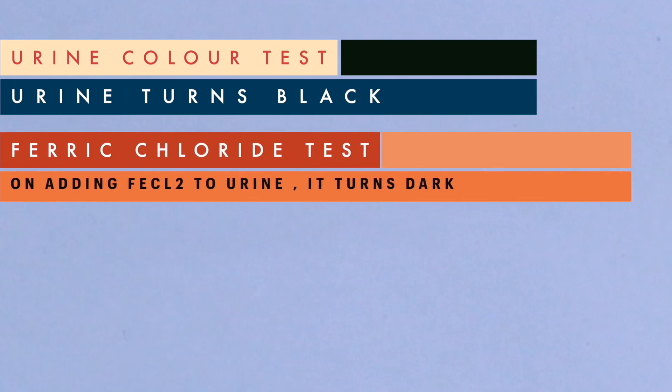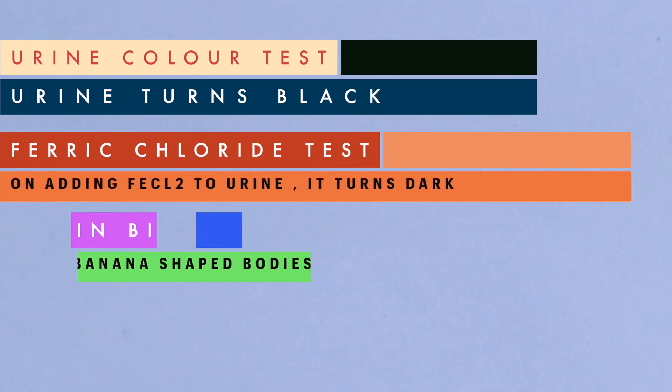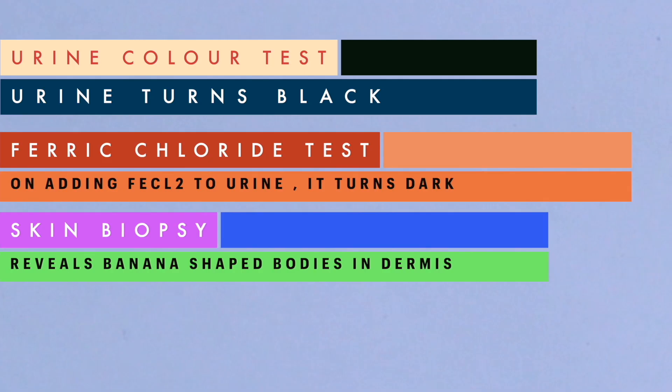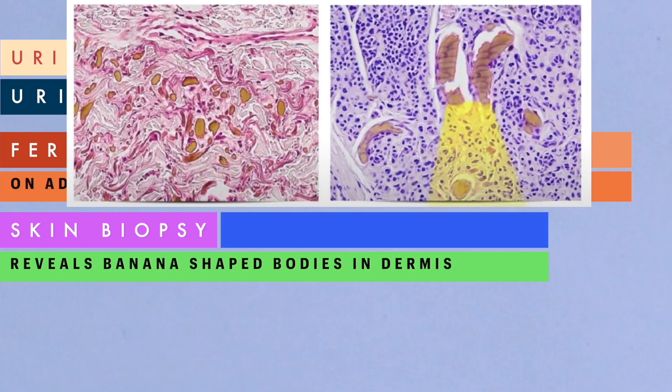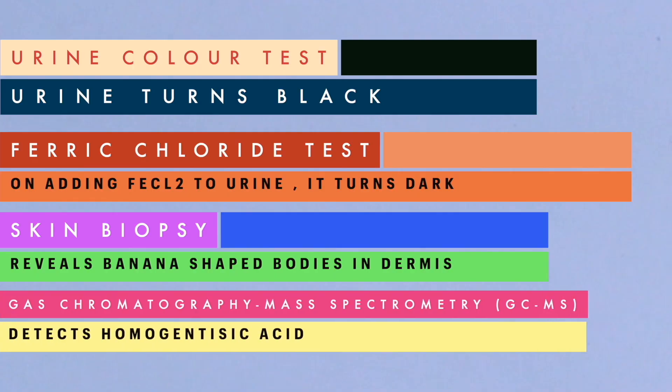Third is the skin biopsy test, which diagnoses alkaptonuria by revealing yellow-brown pigmented bodies in the dermis. Banana-shaped yellow-brown deposits in the dermis are a classical histological finding, also known as endogenous ochronosis. Fourth is GC-MS analysis (gas chromatography-mass spectrometry), the gold standard test, detecting homogentisic acid in a 24-hour urine sample. Fifth is DNA testing to check for the mutated HGD gene.